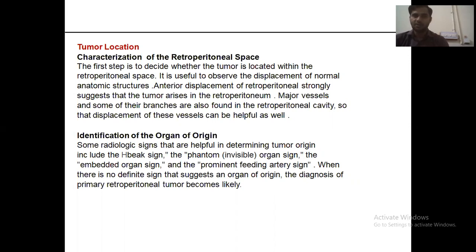Identification of the organ of origin: some radiological signs that are helpful in determining tumor origin include the beak sign, phantom or invisible organ sign, embedded organ sign, and prominent feeding artery sign. When there is no definitive sign suggesting the organ of origin, the diagnosis of a primary retroperitoneal tumor becomes likely.